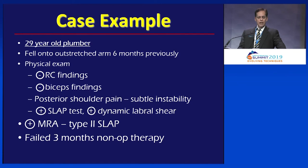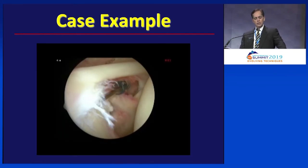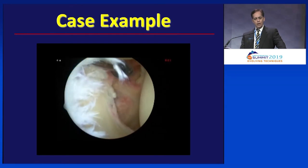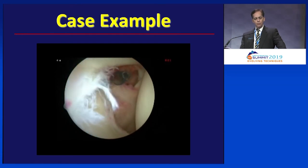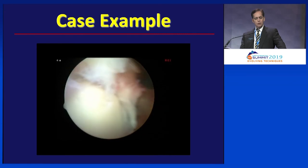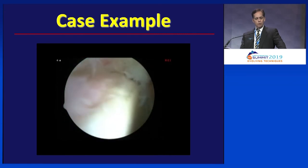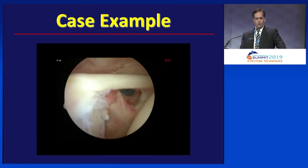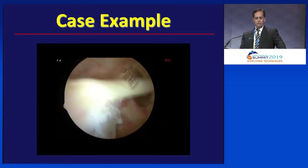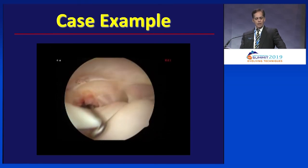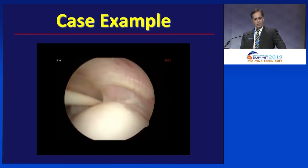So this is my guy. Right shoulder, beach chair position. You can see that he's got significant changes of that posterior superior labrum, typical for what we might anticipate for a type 2 SLAP lesion. You can see the superior glenoid bone. Look at his biceps — completely normal. Rotator cuff — completely normal. An acute injury, type 2 SLAP lesion. So I've debrided him.